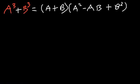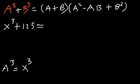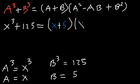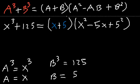Let's try another example: factor x³ + 125. Pause the video and try it. Here a³ = x³ so a = x, and b³ = 125. The cube root of 125 is 5, so b = 5. This gives (x + 5)(x² - 5x + 25). That's how you factor a sum of cubes.